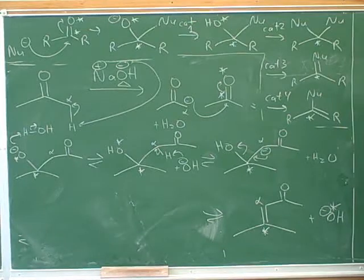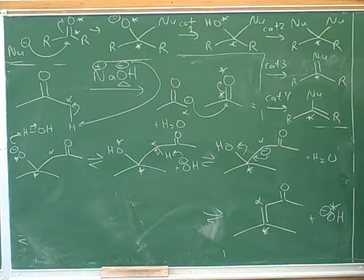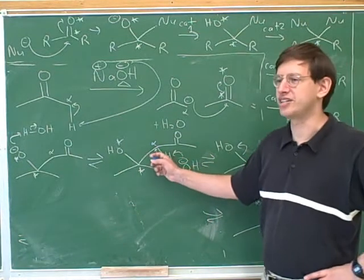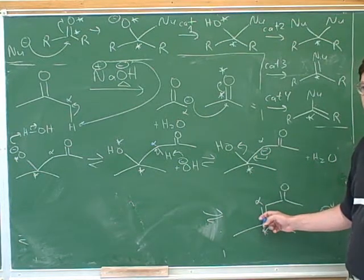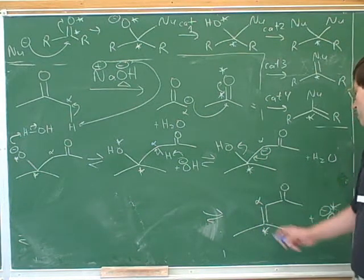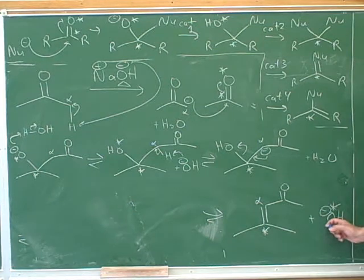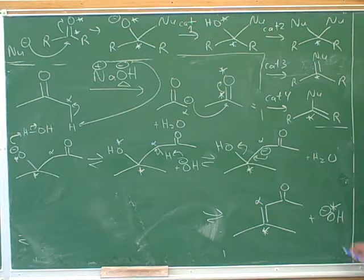One thing that nature would like to do is form conjugated systems. This was not conjugated, but when the hydroxide leaves, that allows us to make the conjugated system. So that's the driving force that explains why we're able to use hydroxide as a leaving group. We don't want hydroxide leaving groups willy-nilly — there has to be a reason, and the reason here is to form this conjugated system.